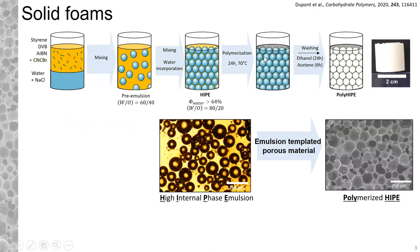We were then able to polymerize the continuous phase containing the monomers, solidifying it. By washing and drying, we isolated a self-standing porous monolith, getting rid of the water and all residual monomers. By SEM we can see that the polyHIPE — the polymerized HIPE — is the exact image of the initial emulsion, confirming that we can obtain emulsion-templated porous materials.